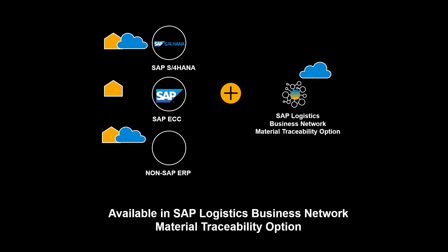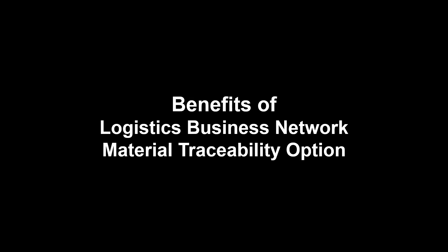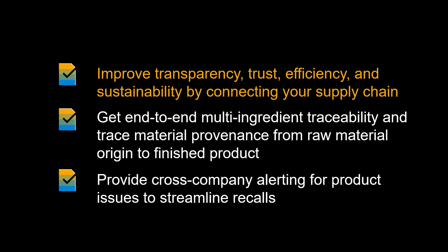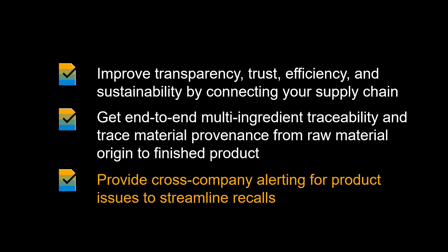The functionality shown is available in SAP Logistics Business Network Material Traceability option. It is a native cloud offering from SAP and can connect to SAP S/4HANA Enterprise Management, SAP ECC, as well as non-SAP ERP systems. With LBN Material Traceability option, you can improve transparency, trust, efficiency, and sustainability by connecting your supply chain. It gives end-to-end multi-ingredient traceability and enables tracing of material provenance from raw material origin to finished product. In addition, LBN Material Traceability option provides cross-company alerting for product issues to streamline recalls.